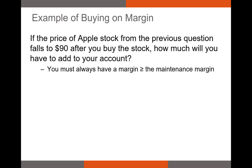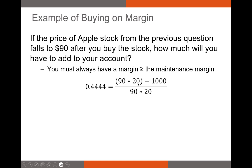Let's take a look at one more example of buying on margin. If the price of Apple stock from the previous question falls from $100 to $90 after you buy the stock, how much will you have to add to your account? Your margin has to be equal to or greater than the maintenance margin. Let's see what our actual margin is after the share price falls from $100 to $90. We have 90 times 20 shares, so $1,800 in our total account. We subtract out the margin loan and divide by $1,800.